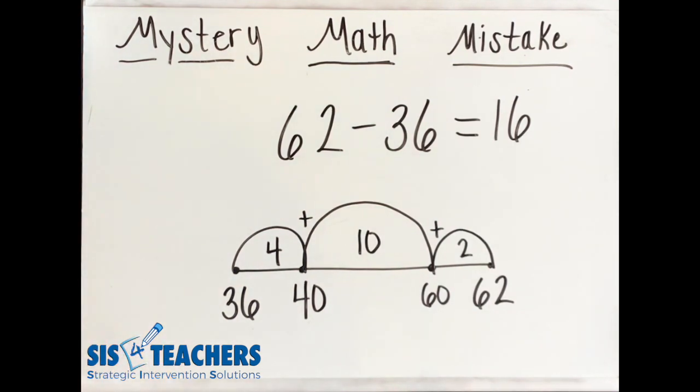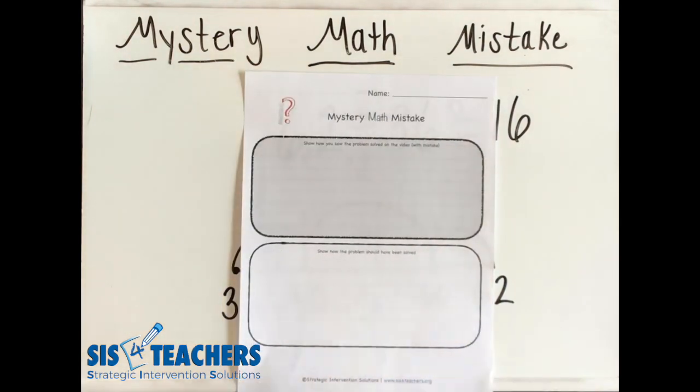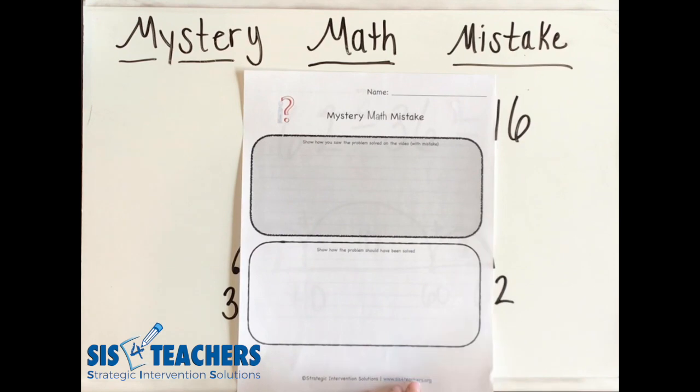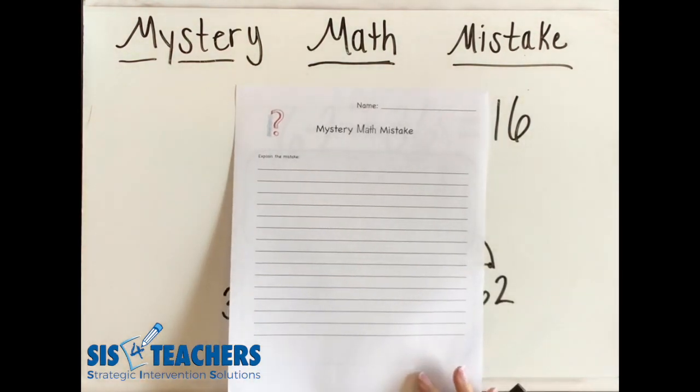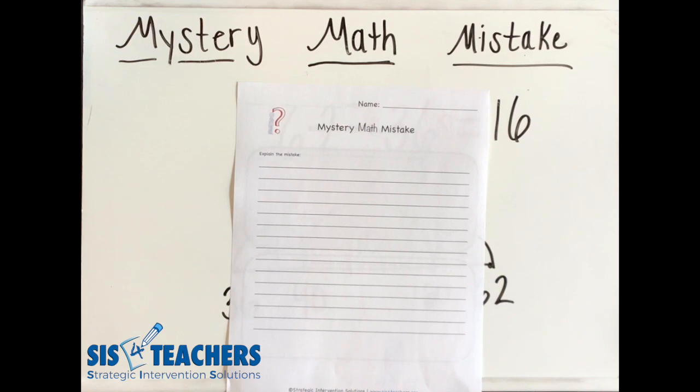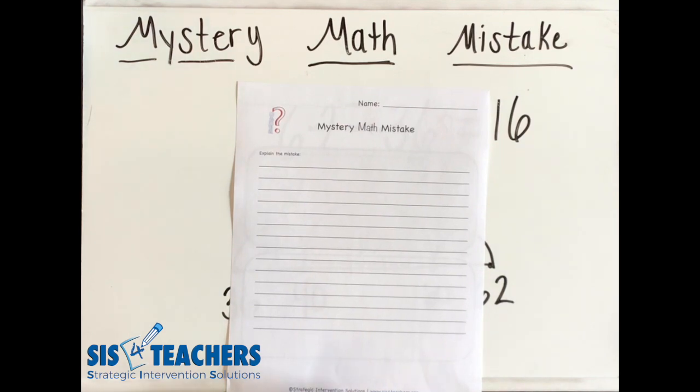It's your turn to pause the video and fill out our mystery math mistake recording sheet. You're going to record how I just solved the problem in the video, and then maybe you have thoughts about how I should have solved the problem. When you flip it over onto the back, there's an area for you to explain my mystery math mistake.